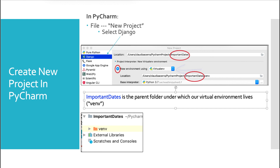It's a really good idea to use a virtual environment when you're creating a project framework like Django, because you'll be installing many different packages, and this will instantly keep track of all of that. When you want to create your next project, you'll have it all together. It creates a layer of abstraction away from your base OS, and it's a wonderful way to work. Location gets self-populated for me based on the name of the project. My base interpreter in my case is 3.7. Important Dates is the parent folder under which our virtual environment will live.